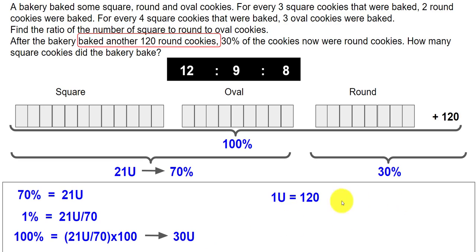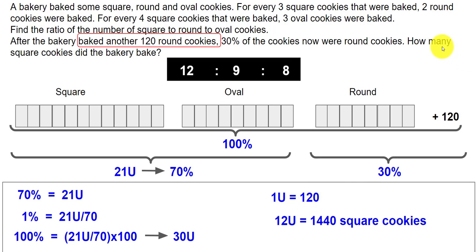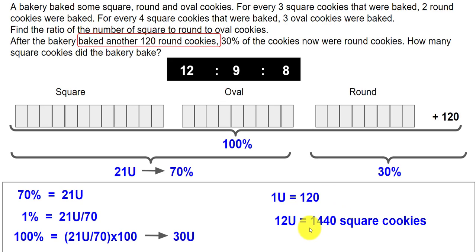So 1 unit equals 120. The question asks how many square cookies were baked — and square cookies are represented by 12 units. Therefore 12 × 120 = 1,440. The bakery baked 1,440 square cookies.